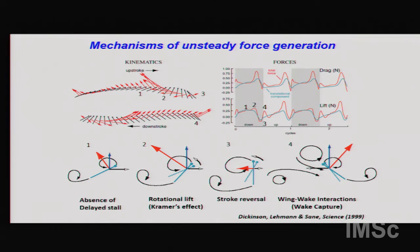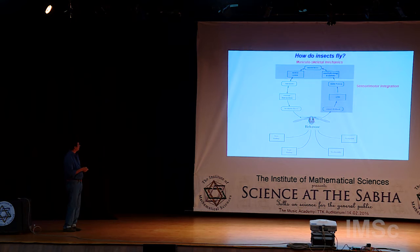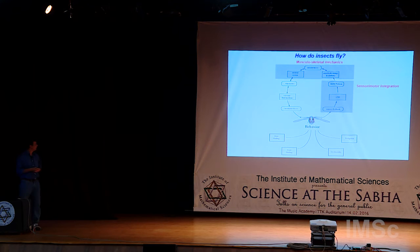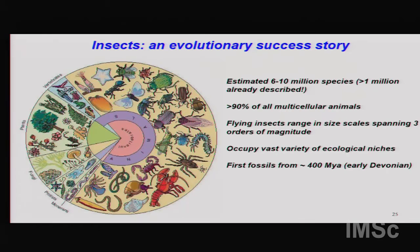This work continues with flexible wings rather than rigid wings, and we've also done three-dimensional PIV of the full flow. The next set of questions relates to how sensory input and thoracic vibrations translate into wing motion. Insects are the most successful multicellular animals on Earth — of an estimated six to ten million species, more than one million have been described, representing over 90% of all multicellular animal species, ranging in size by three orders of magnitude.